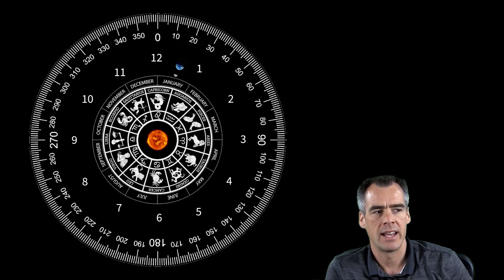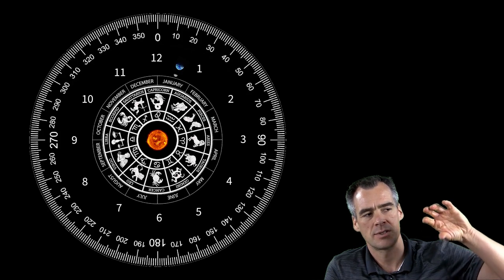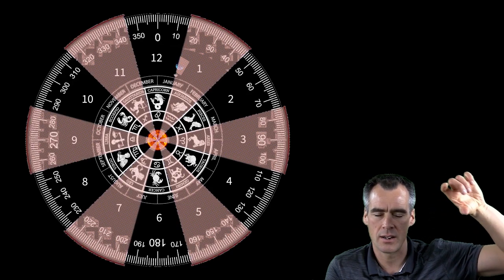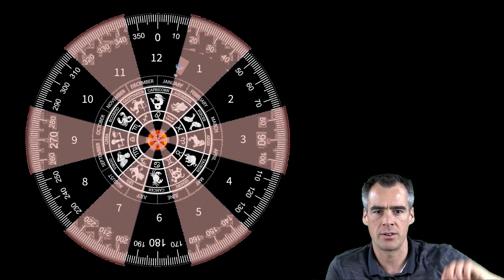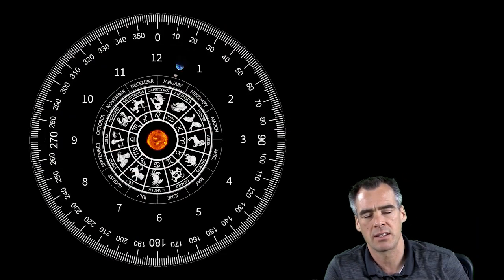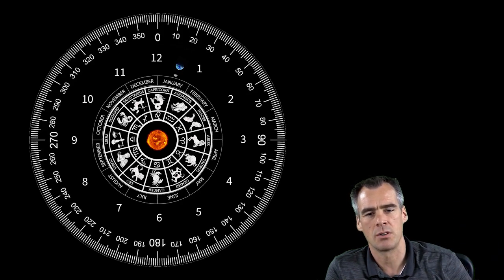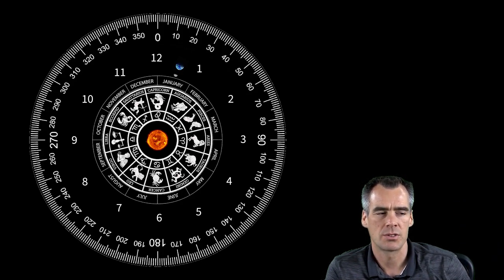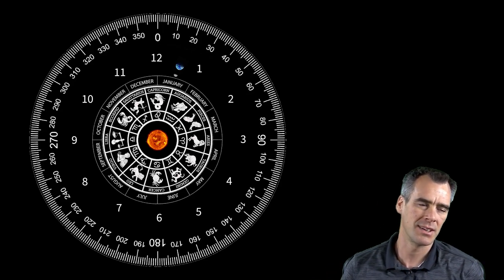Those signs start with Aries, and then Taurus, Gemini, Cancer, Leo, Virgo, Libra, Scorpio, Sagittarius, Capricorn, Aquarius, and Pisces. Each of those signs represents a 30 degree section of the earth's orbit around the sun. So those 12 signs are clearly tracing back to those 12 lunar cycles which are about 30 degrees.